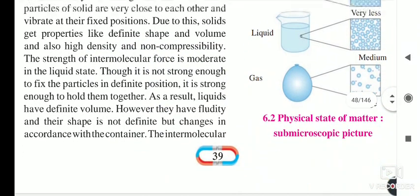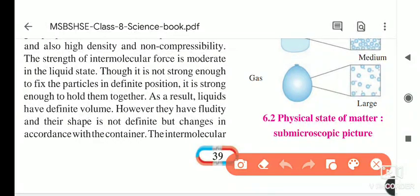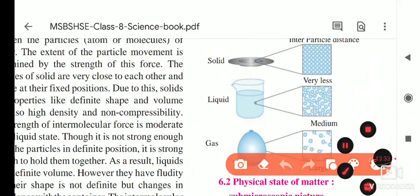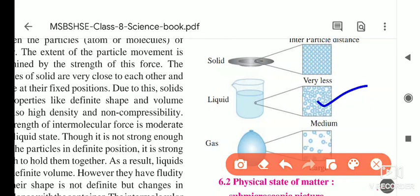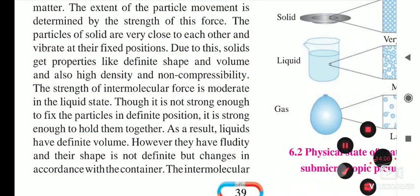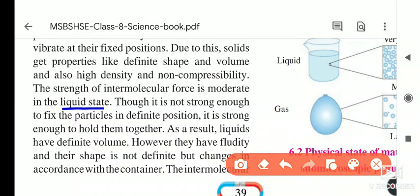The strength of the intermolecular force is moderate in the liquid state. It is not strong enough to fix the particles in a definite position. For example, if you put milk on a surface, it flows away wherever there is a slope — this happens because of the intermolecular structure of the liquid particles.